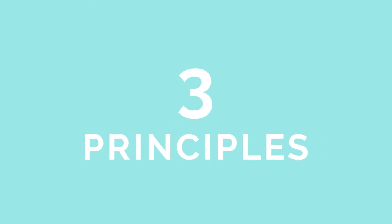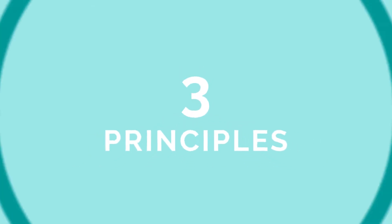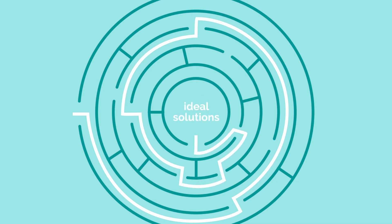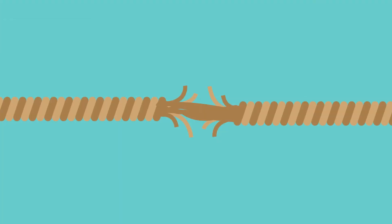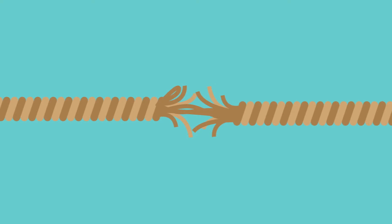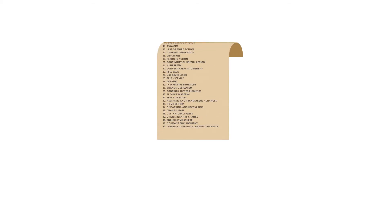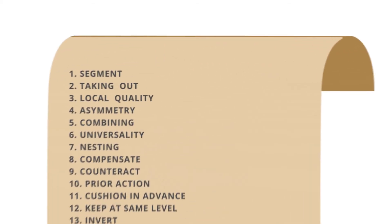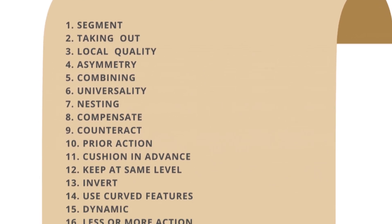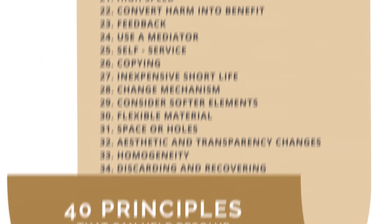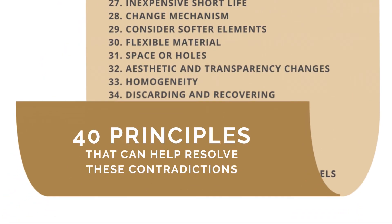There are three principles of TRIS. One, there are ideal solutions to complex problems. Two, there is some contradiction in a problem that needs to be surfaced. And three, there are 40 principles based on experience that can help resolve these contradictions.